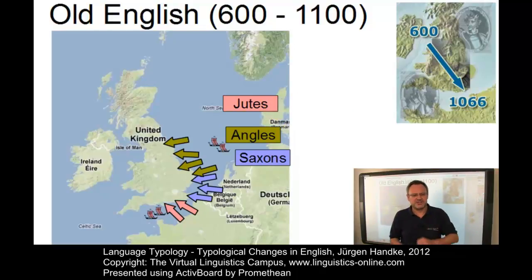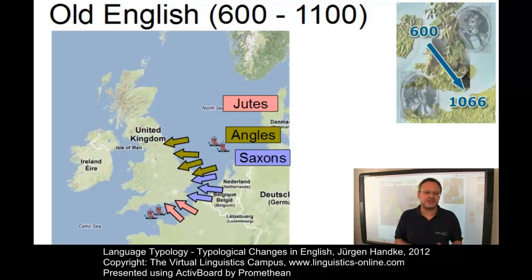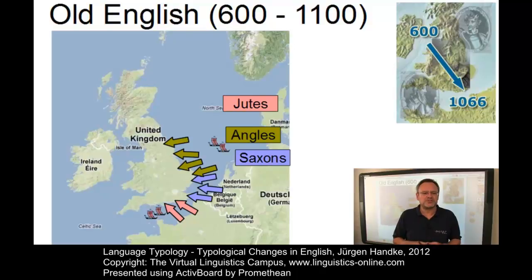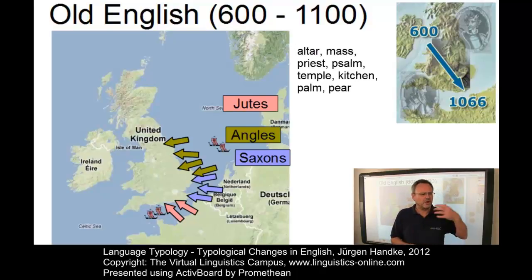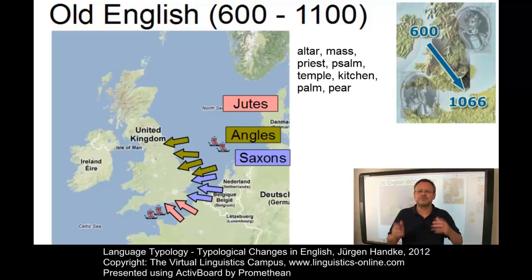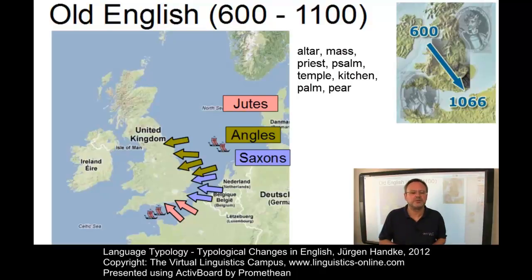From the 6th to the 8th century after Christ, the Anglo-Saxons were converted to Christianity, and numerous Latin words came into the English language. Typical examples of these words are terms like altar, mass, priest, psalm, temple, kitchen, palm, and pear, to name a few.